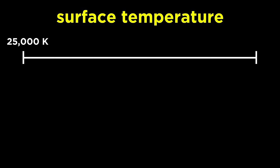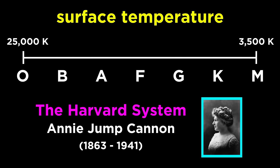So from hottest at around 25,000 Kelvin to coolest at around 3,500 Kelvin, we now have O, B, A, F, G, K, and M stars, a classification system called the Harvard system, which was developed by early astronomer Annie Jump Cannon.